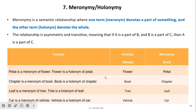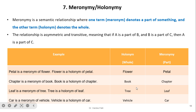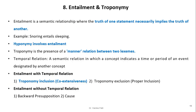Meronymy and holonymy: meronymy is a semantic relationship where one term denotes a part and the other term denotes the whole — a part-whole relationship. The relationship is asymmetric and transitive: if A is a part of B, and B is a part of C, then A is a part of C. The meronym is the part and the holonym is the whole. For example, 'petal' is a meronym of 'flower' (flower is the whole), and 'flower' is the holonym of 'petal.' Other examples: book/chapter, tree/leaf, vehicle/car.